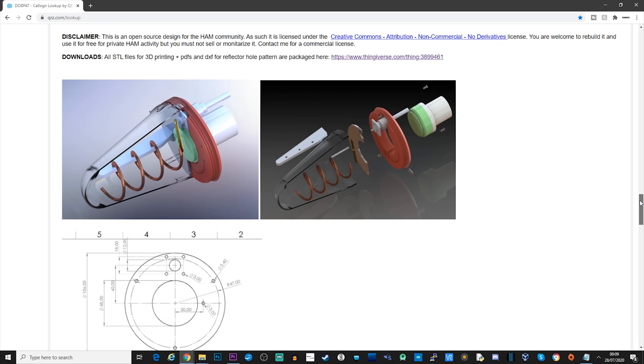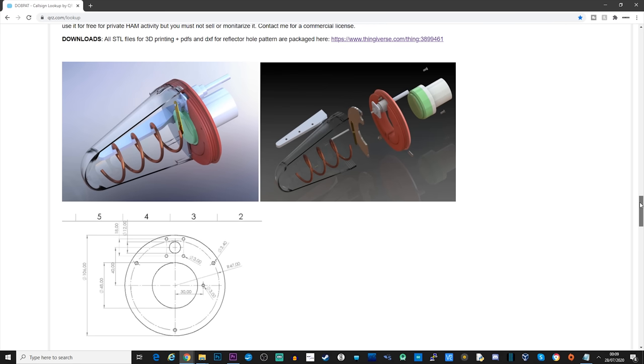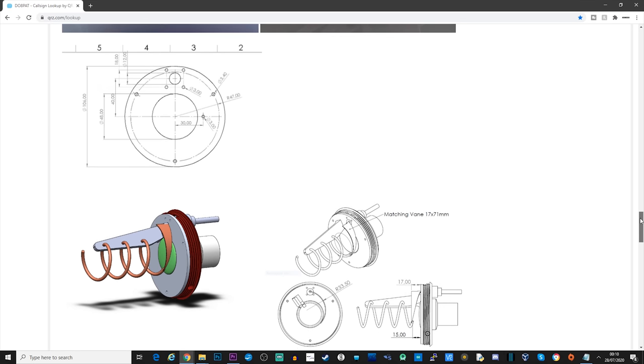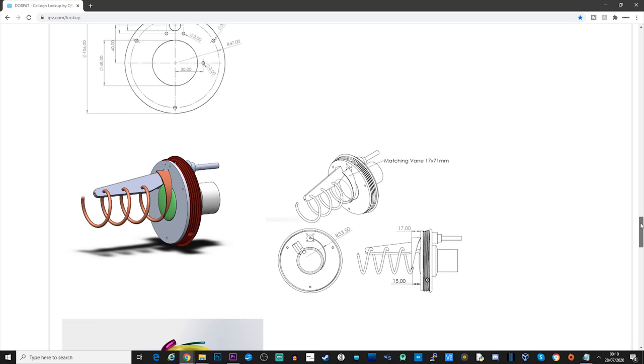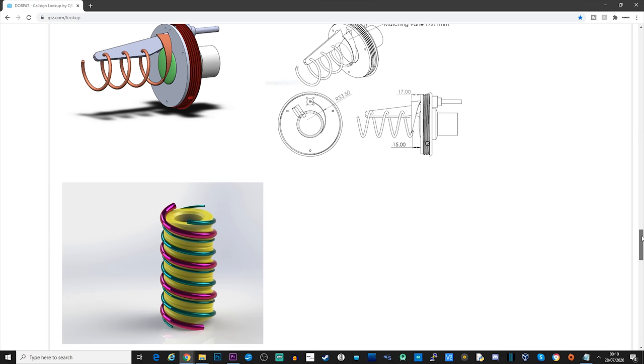So on DO8PAT's QRZ page, he has a nice write-up about this antenna, and what you will notice from these images here is that it's going to need some 3D printed parts. Now obviously you need a 3D printer or you need a friend that's got a 3D printer.